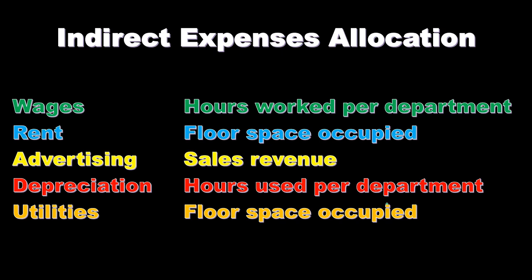For utilities, we might pay one utility bill for the whole building covering multiple departments. A common and easy approach is to use floor space occupied as the activity base, because larger floor space would likely use more utilities. However, if one department uses significantly more utilities than others for some reason, an adjustment might be needed. If all departments are doing normal office activities, floor space is a reasonable activity base for utilities.